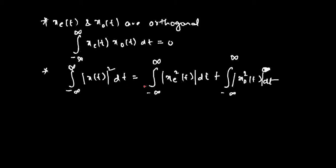The energy of x(t) is equal to the energy of the even component of the signal plus the energy of the odd component of the signal. We will prove this later, but these are the two important points to remember for the even and odd components of a signal, that is x_e(t) and x_o(t). The third classification of signals is energy and power signals.